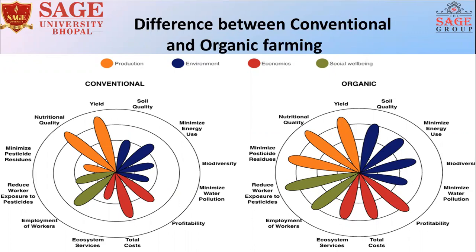So now we move to organic farming. In case of organic farming, we use organic produce into the field, and ultimately we can achieve sustainable growth of the plant as well as the agriculture production system.